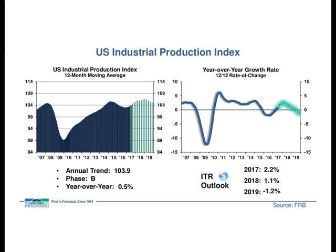Last quarter we were right on the cusp of a Phase A to Phase B transition — U.S. industrial production was just about even with the year-ago level at around 0%. Things have progressed nicely since then, and in the last quarter we've seen a definitive transition to Phase B accelerating growth. Our current outlook calls for accelerating growth to persist through the first quarter of 2018, finishing 2017 up 2.2% — healthy but modest growth — followed by a Phase C transition in 2018.